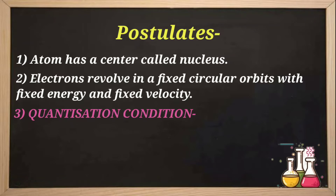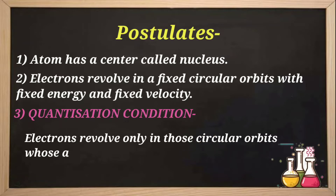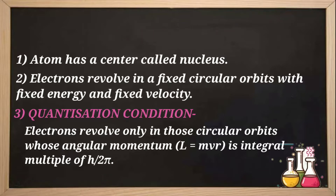Third, he introduced us to the quantization condition. The quantization condition states that the electron revolves only in those circular orbits for which the angular momentum is an integral multiple of h by 2π. So let's first look at what angular momentum is.